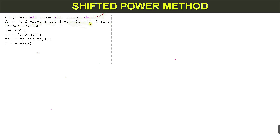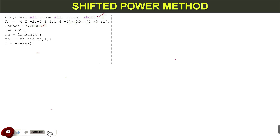Next we define the starting vector x-naught, and then we write the given lambda, which is the dominant eigenvalue of the matrix. We will find the smallest eigenvalue of this matrix using the shifted power method.